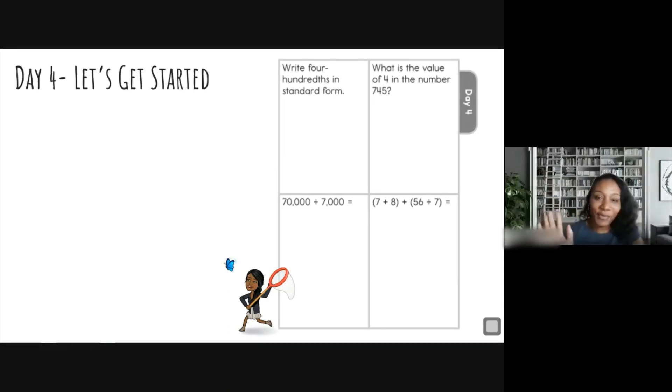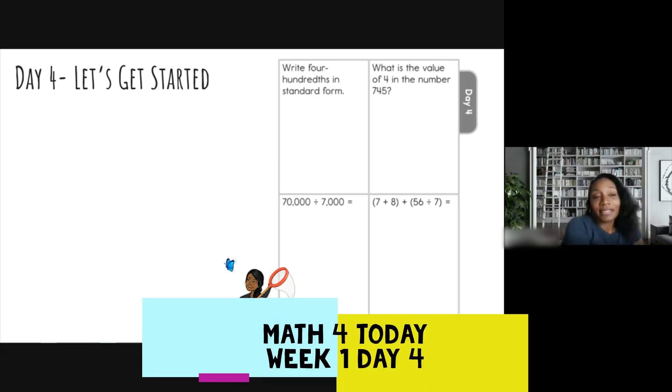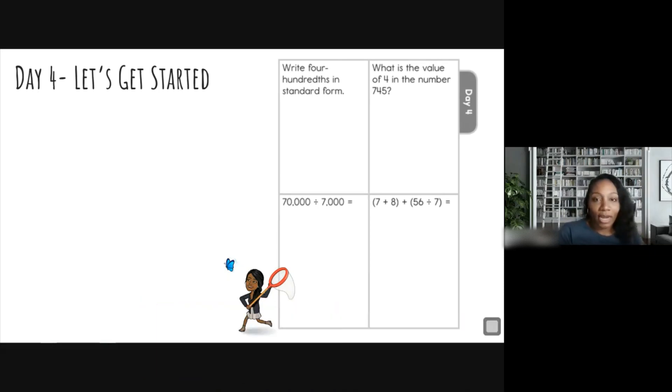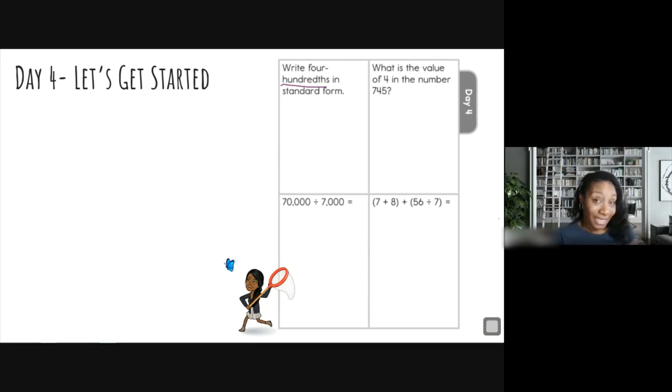All right, hello and welcome back to fifth grade math. This is week one, day four. Let's go ahead and get started. It says write four hundredths in standard form, so let's do that. I like to select purple, that's one of my favorite colors. Now we have that selected. If you've noticed, this says hundredths with a TH on the end, so that means we're dealing with decimals.